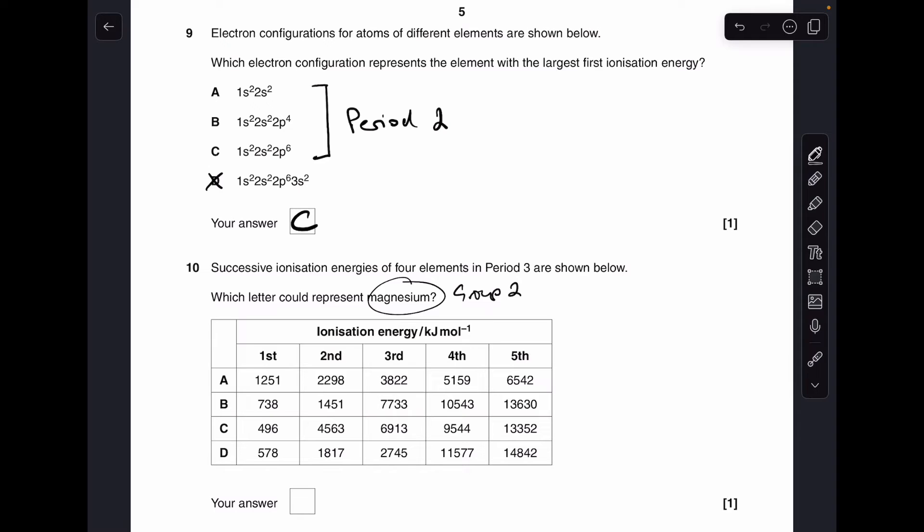Number 10. We've got this table of successive ionization energies. And we're asked which one is for magnesium. So just remember, magnesium is in group 2. So its big jump up in ionization energy is going to be between the second and the third. Because you're breaking into a new shell closer to the nucleus. So where's that big jump? It's there. So B is the answer.